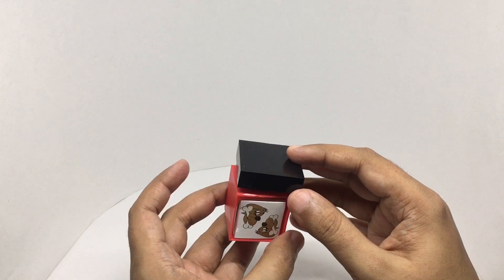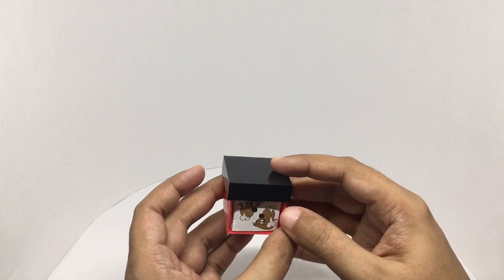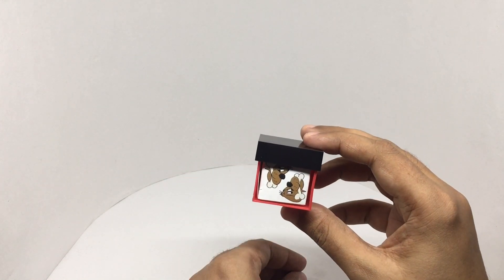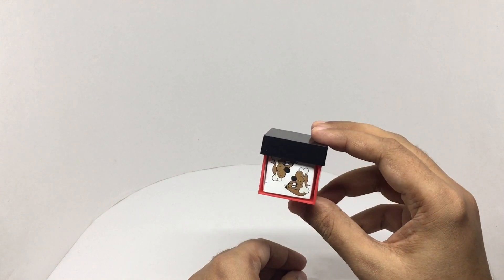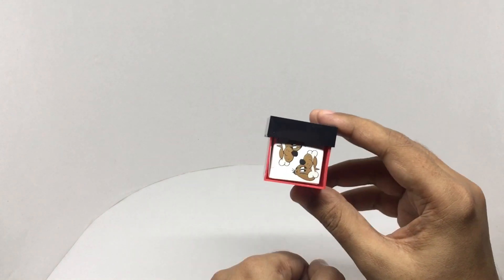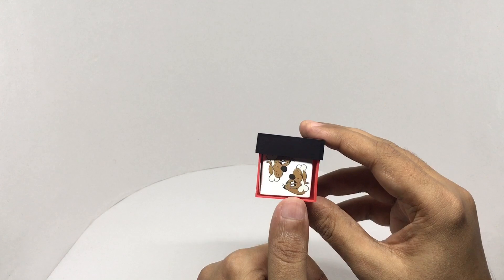He removes the cover and puts it like this, brings out the box to the front, putting this on his forehead. While bringing this to his forehead, he looks at the animal.